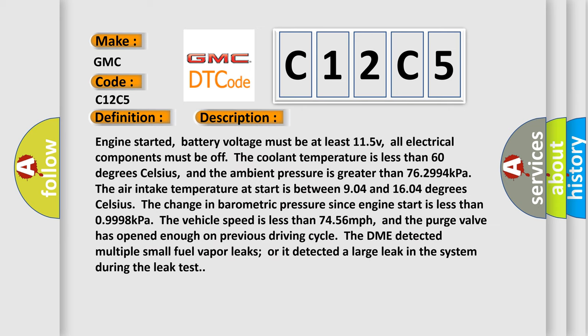Engine started, battery voltage must be at least 11.5V, all electrical components must be off. The coolant temperature is less than 60 degrees Celsius, and the ambient pressure is greater than 76,299.4 kPa. The air intake temperature at start is between 9.04 and 16.04 degrees Celsius. The change in barometric pressure since engine start is less than 0.9998 kPa. The vehicle speed is less than 7.456 miles per hour, and the purge valve has opened enough on previous driving cycle. The DME detected multiple small fuel vapor leaks or it detected a large leak in the system during the leak test.